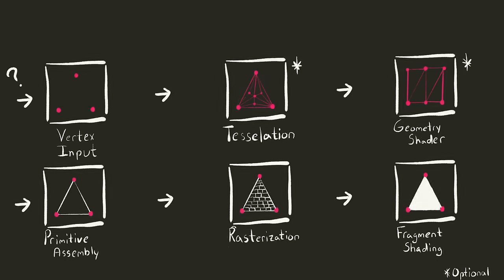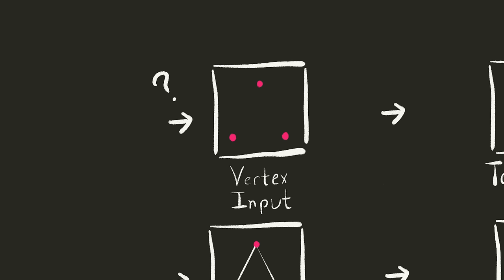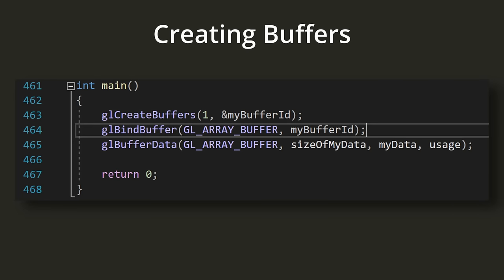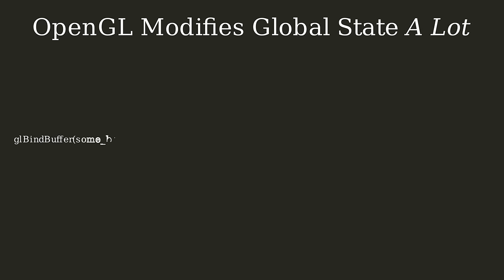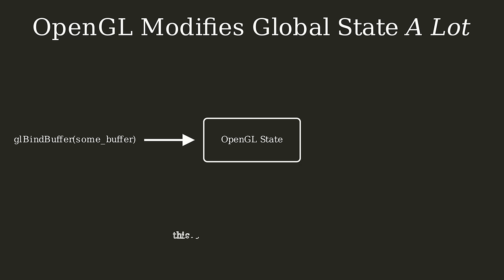The task we want to accomplish is sending vertex data to the GPU, and we can use array buffers and element buffers to accomplish this. Array buffers can be created in OpenGL using three commands in sequence. Now is a good time to mention that OpenGL basically acts like a giant state machine — many different commands mutate some global state. If you're familiar with OOP, this is essentially like a member function on an object that modifies some private member data, and we often have to set up that global state before we perform certain operations.